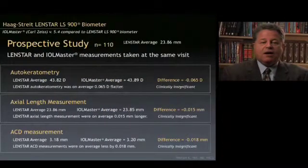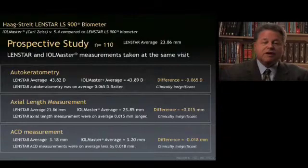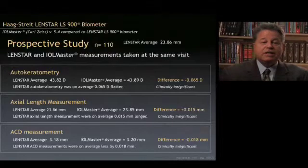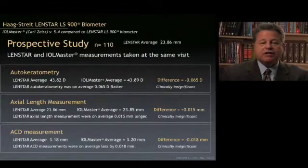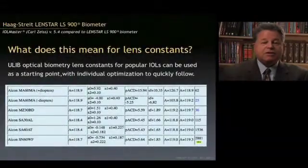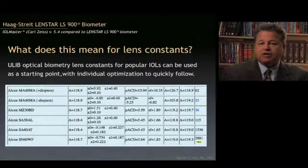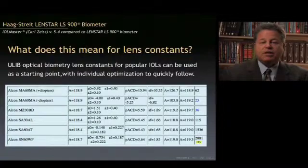The question comes up a lot: how close is this to the IOL Master, and can I use lens constants developed for other forms of optical biometry? In our office we did a prospective study of 110 eyes measured by both the LenStar and IOL Master at the same visit. We found that auto-keratometry, axial length measurement, and anterior chamber depth differed by such a small amount that they were clinically insignificant. This means lens constants developed for other forms of optical biometry can be used as a starting point for the LenStar, and the operator would then quickly do individual optimization.